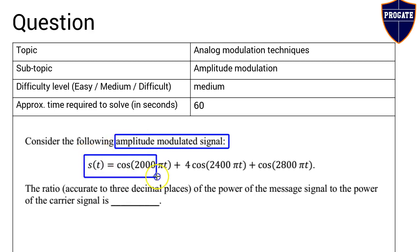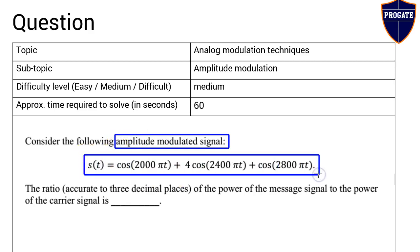The mathematical representation of the AM signal is given by a standard equation. The question asks for the ratio of power of the message signal to the power of the carrier signal.